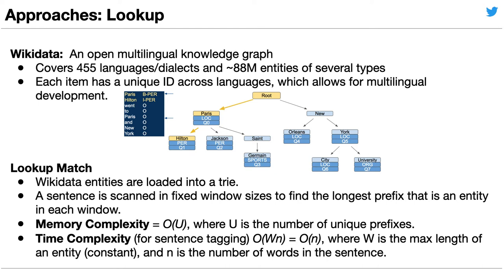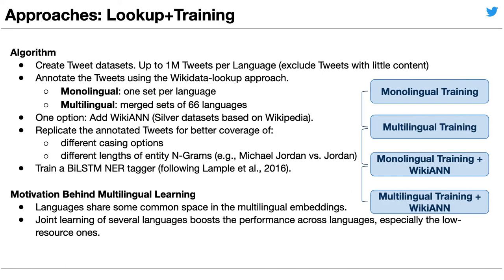We first load the entities into a trie, and then to tag a sentence, we iterate over the words in fixed window sizes. For each window, we search the trie for the longest prefix that is an entity. This yields linear memory and time complexity.